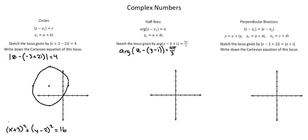For a half line, the significance of z1 is that it represents our starting point. We want the coordinates 3 and negative i. From here, we're going to extend at an angle of 4 pi over 3, working our way counterclockwise from a horizontal extension from our starting point.